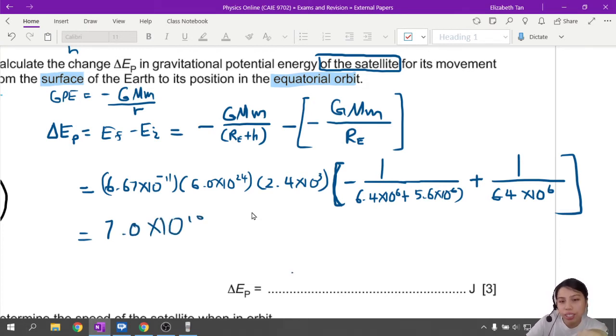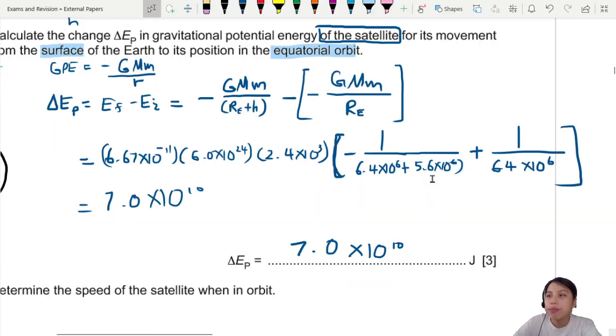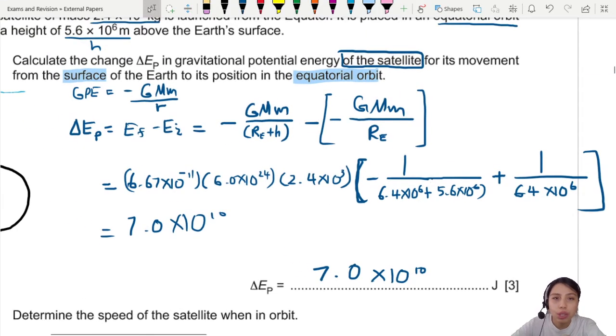So the final answer here, lots of decimals, 7.0 times 10^10. That is the change in energy. 7.0 times 10^10. So you go from low GPE to high GPE because you're very high up in the sky. There is 3 marks for this. Where does that come from? Let's see. The very first one comes if you use the equation for GPE, which is this one. They recognize you're using it. Got no negative sign, it doesn't matter.